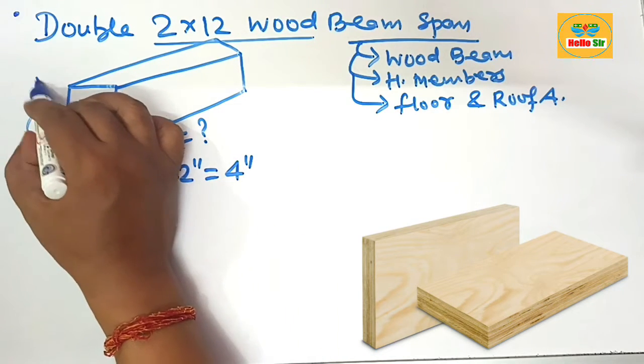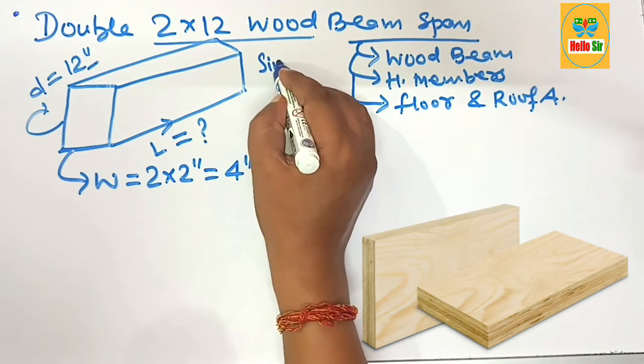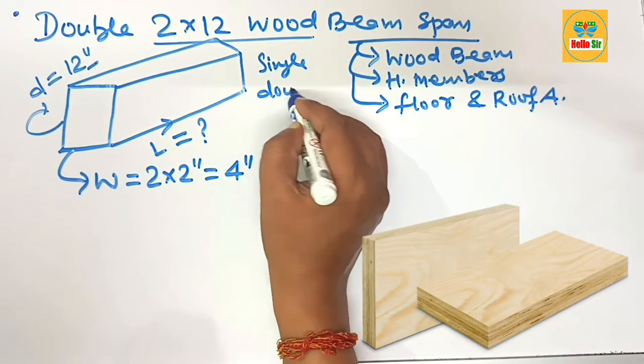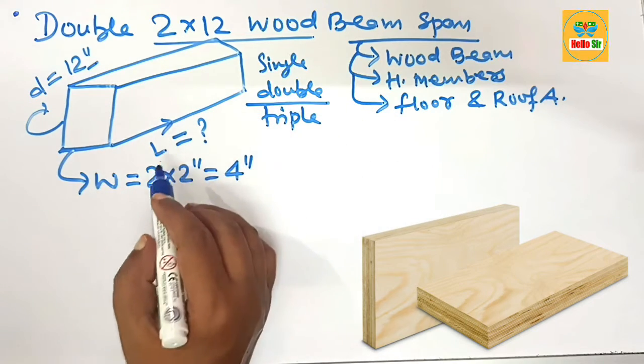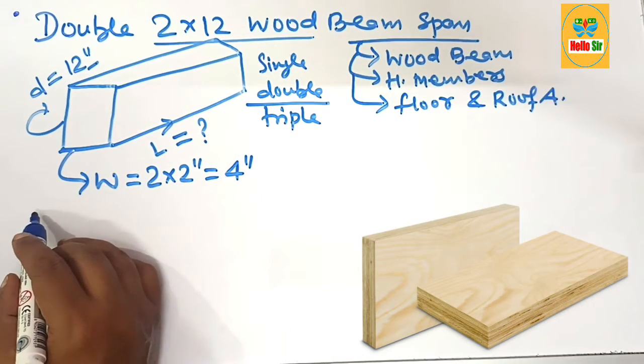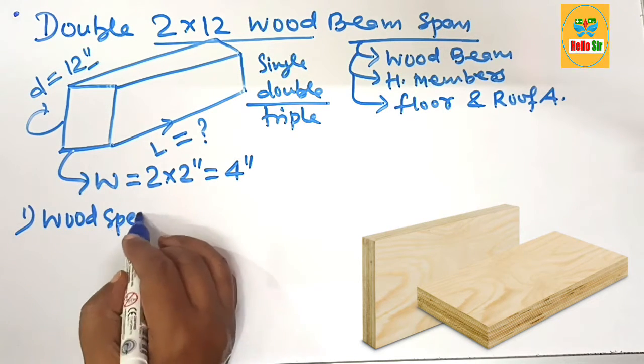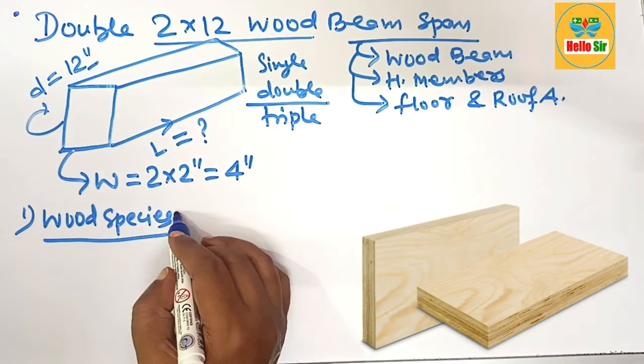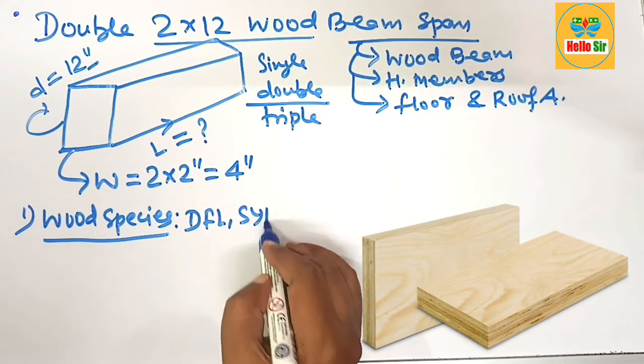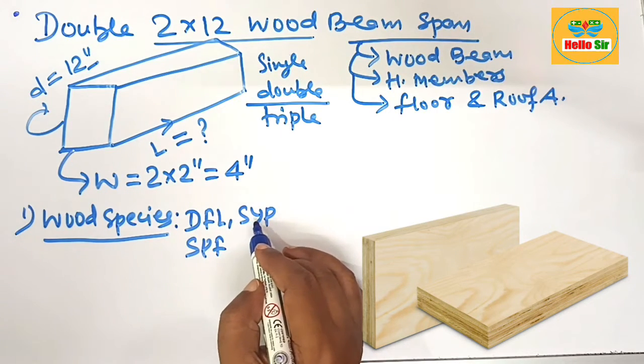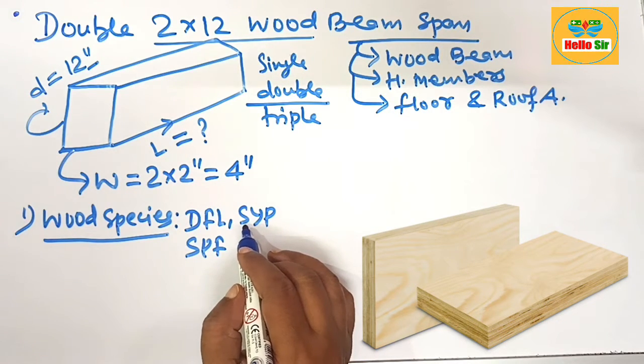Beams come in single ply, double ply, and triple ply, but here it is a double ply beam. The span length of wood beam depends on many factors. First is the wood species - there are different kinds of wood used as dimensional lumber like DFL, SYP, SPF. Southern Yellow Pine is the strongest wood species and it can span more distance compared to other species.